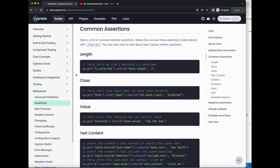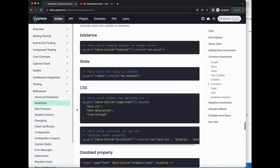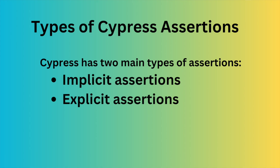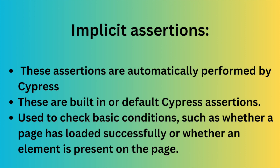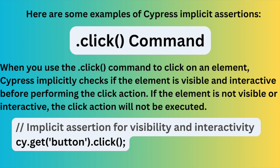They also have some good examples here, so I suggest you go over this. Now let's go over the types of assertions. Cypress has two main types: implicit assertions and explicit assertions. Implicit assertions are automatically performed by Cypress and are used to check basic conditions, such as whether a page has loaded successfully or whether an element is present on the page. We can say that these are built-in or default Cypress assertions. Here are some examples — the dot-click command.